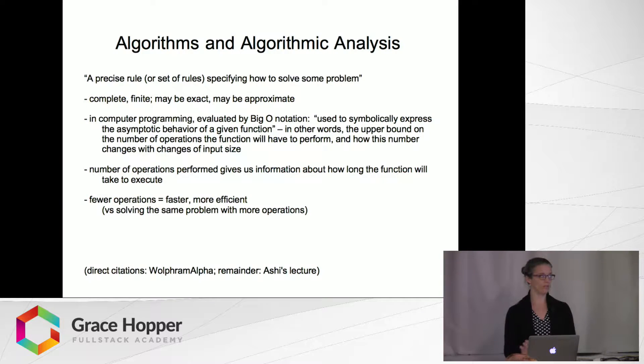Briefly, to give an introduction to an algorithm, it's defined simply as a precise rule or set of rules specifying how to solve a problem. Algorithms are complete, finite. They may be exact in terms of their solution to a problem, or they may be approximate. In programming, they are evaluated among other ways, but one important way is by their big O notation, which we are all familiar with. The big O represents the upper bound on the number of operations a function will have to produce when it is called. So the number of operations and how this number changes as the size of input grows gives us some information about how long the process is going to take to complete.